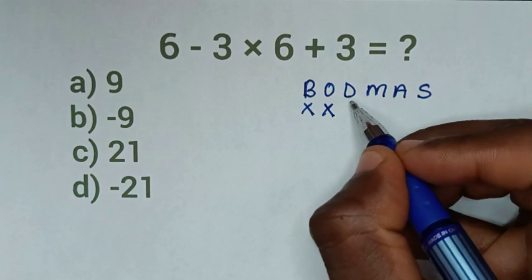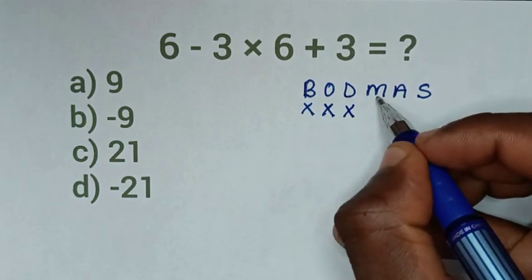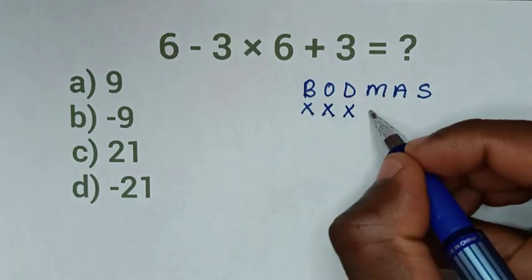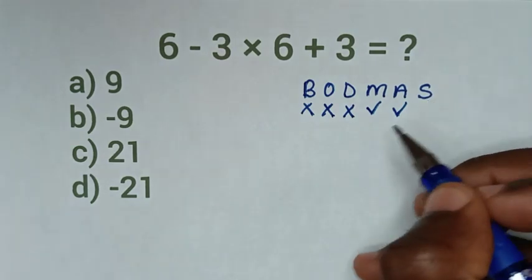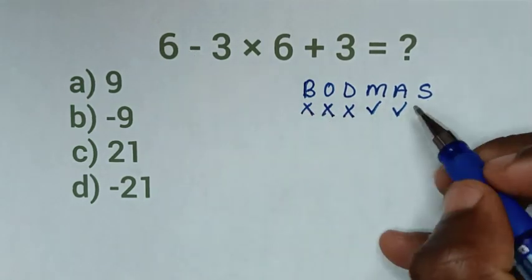D is division - we don't have division. M is multiplication - we have this multiplication here. A is addition - we have this addition. S is subtraction - we have the subtraction.